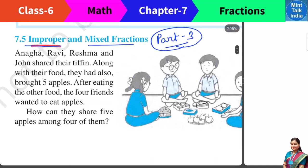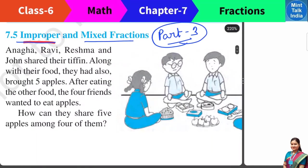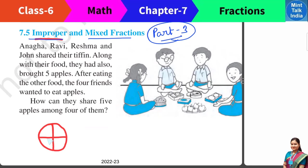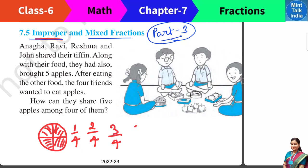Our topic is Improper Fractions and Mixed Fractions. If we have made 4 quarters, we have made 4 equal parts. We call 1 quarter, 2 quarters, 3 quarters, and if we consider 4 quarters, we call 4 by 4 — we call it 1 whole.